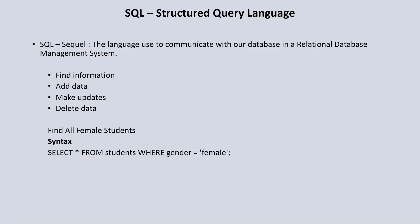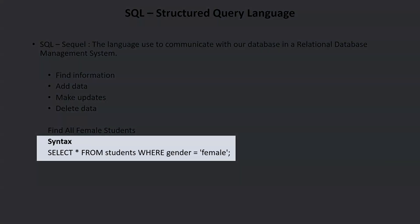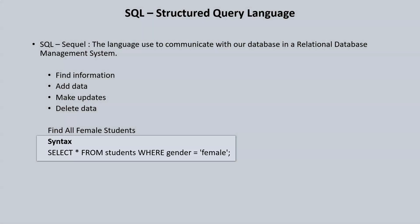For instance, assuming we have data within our database that contains information about students, say in our college or university, and for our research purpose we need to retrieve the names or the information of the female students within our database, we can request that information by using the syntax: SELECT * FROM students WHERE gender = 'female'. Don't worry about the syntax — you will do a ton of this in this course — but this is the way in which we use SQL to retrieve information about all the female students within our database.